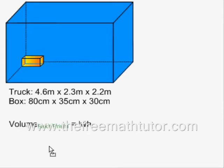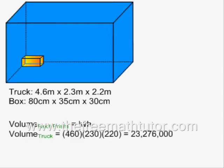The volume formula for a rectangular prism is length times width times height. If we fill in this formula with the dimensions of the truck, we get 460 times 230 times 220, and the answer is 23,276,000 cubic centimeters.